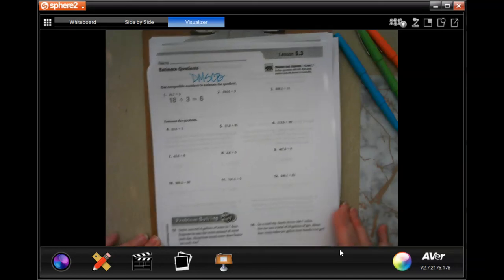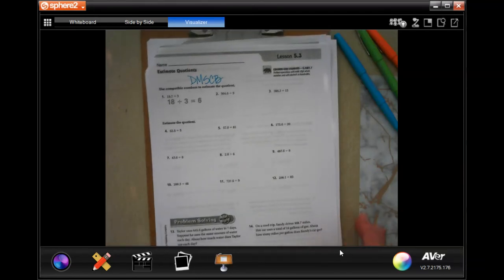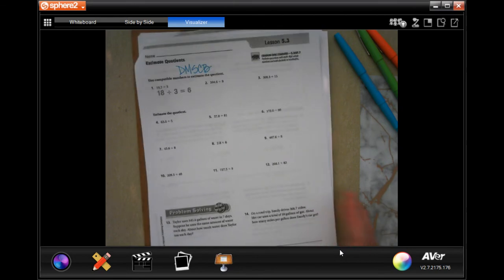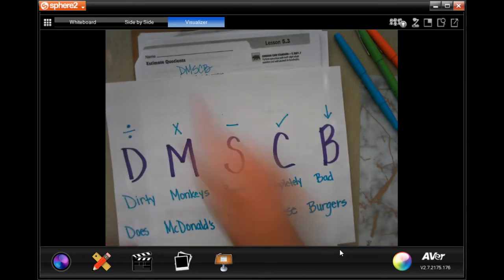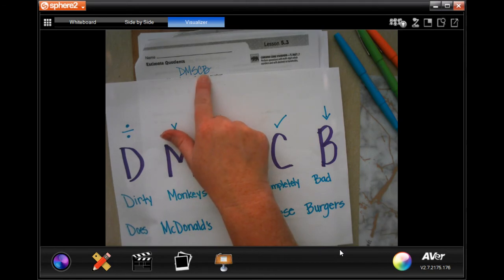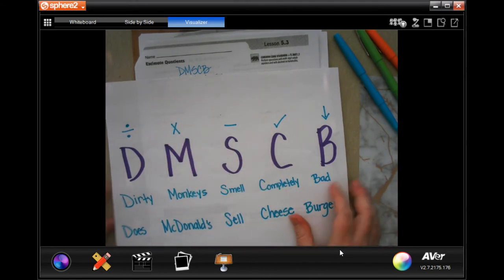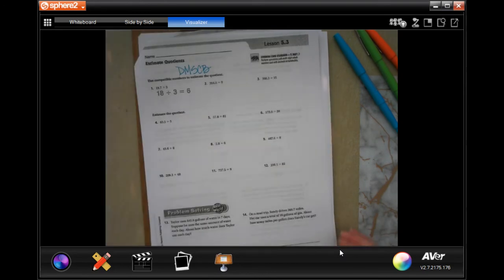Hey guys, welcome to fifth grade chapter 5 lesson 3. We're going to go ahead and get started. When you pause, write this down. You'll see at the top of my paper I just write down the initials. It's just to remind me what the steps are in division. Pause, rewind, do whatever you do, go back and make that happen.